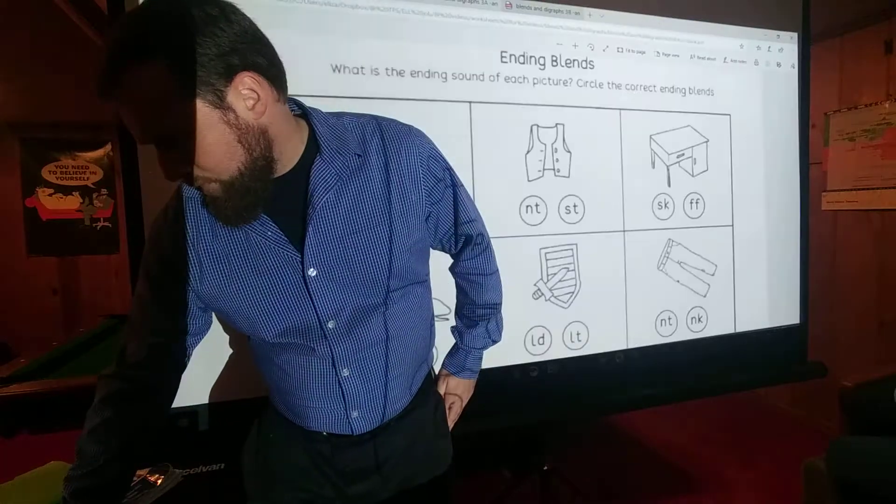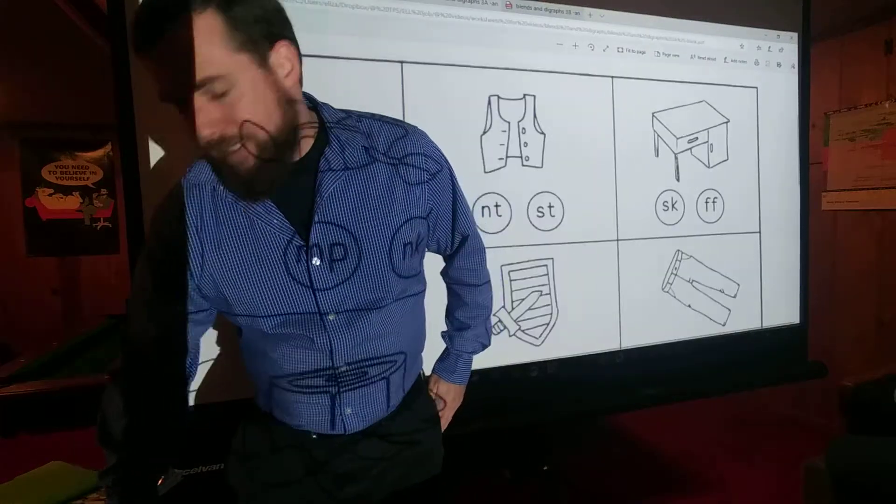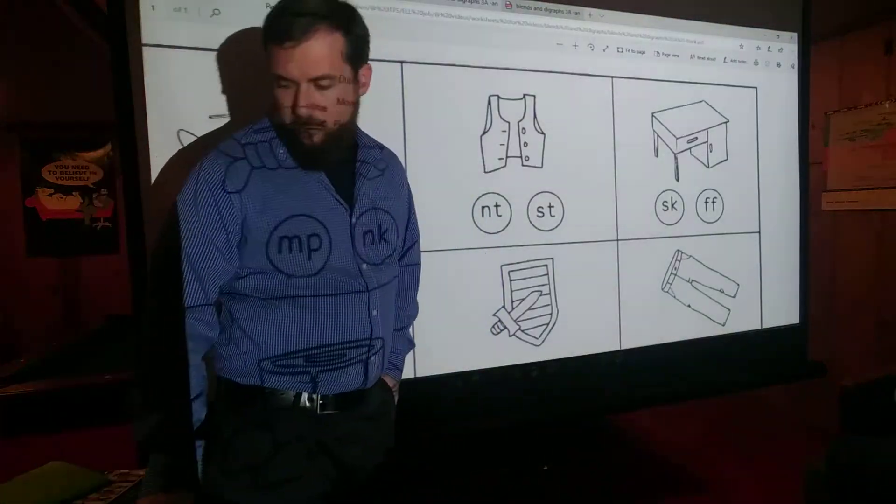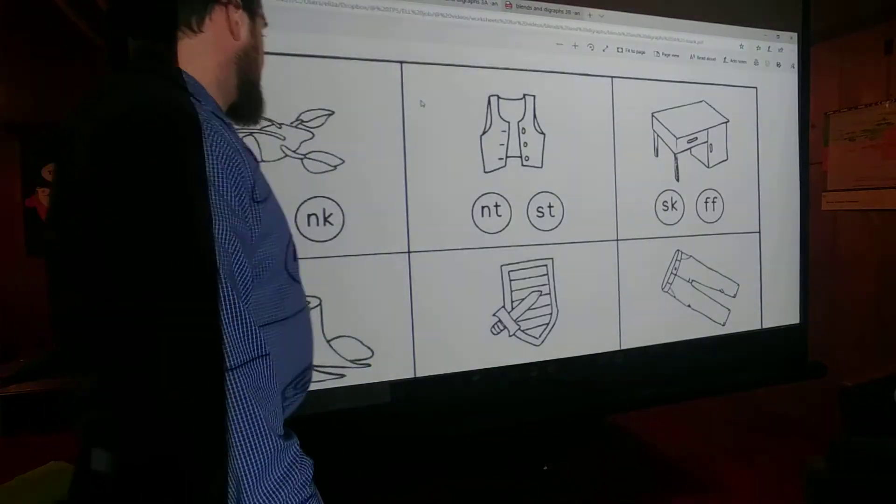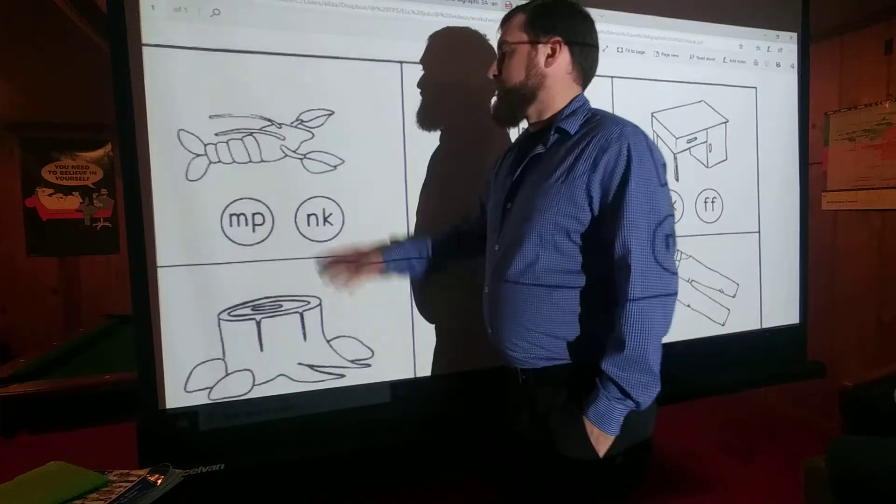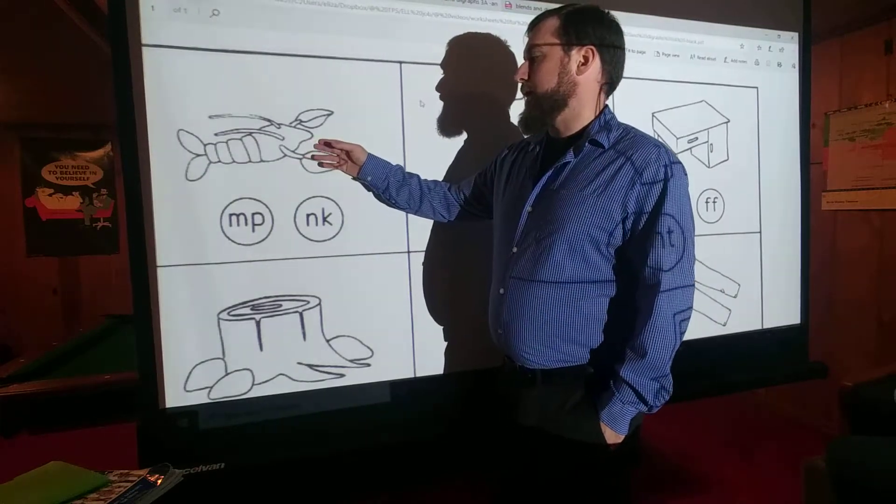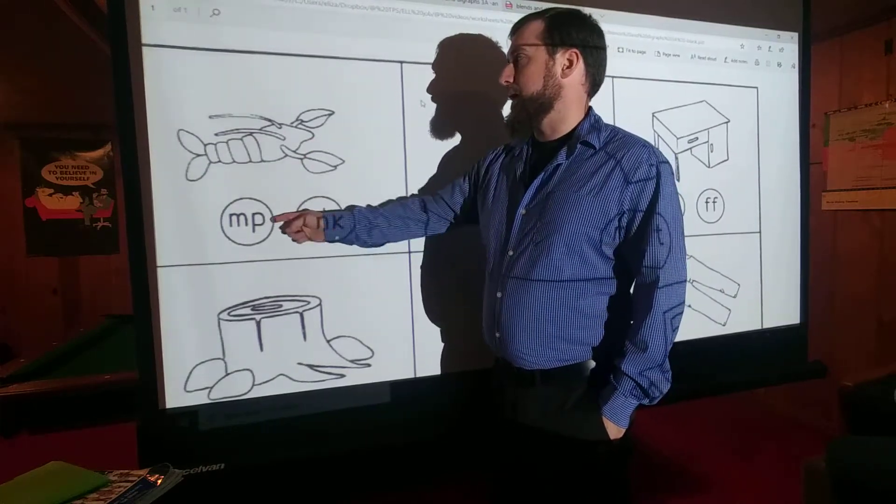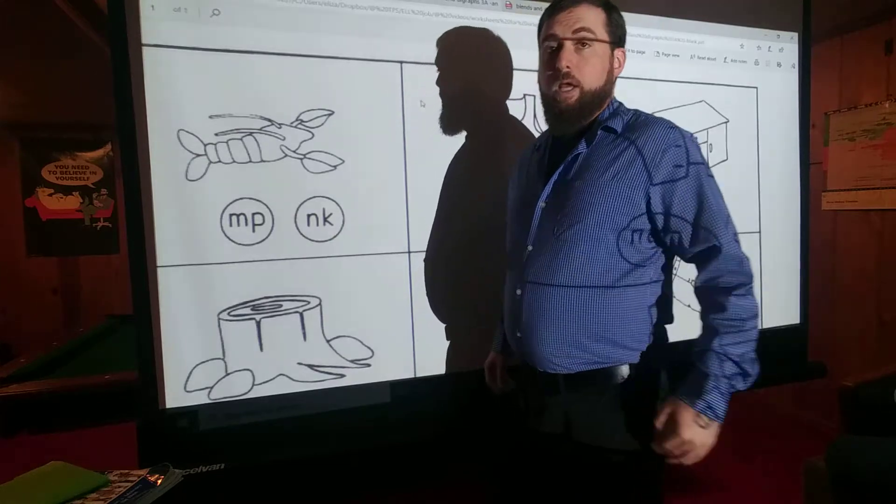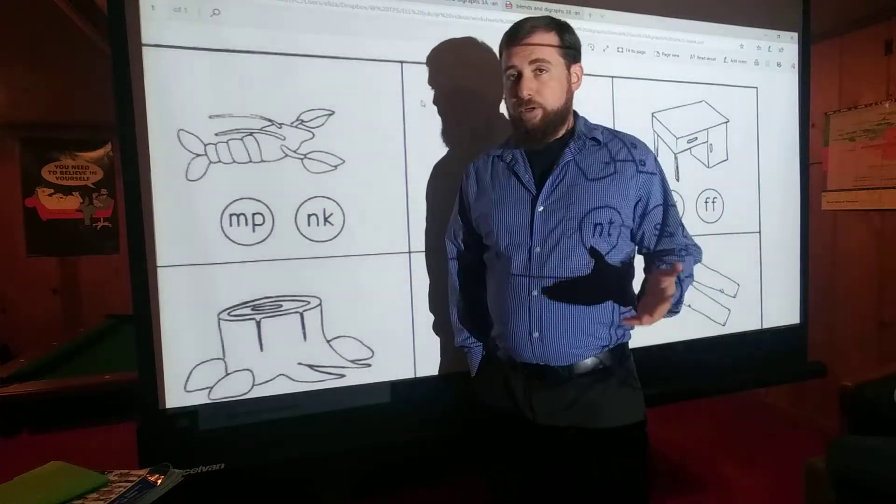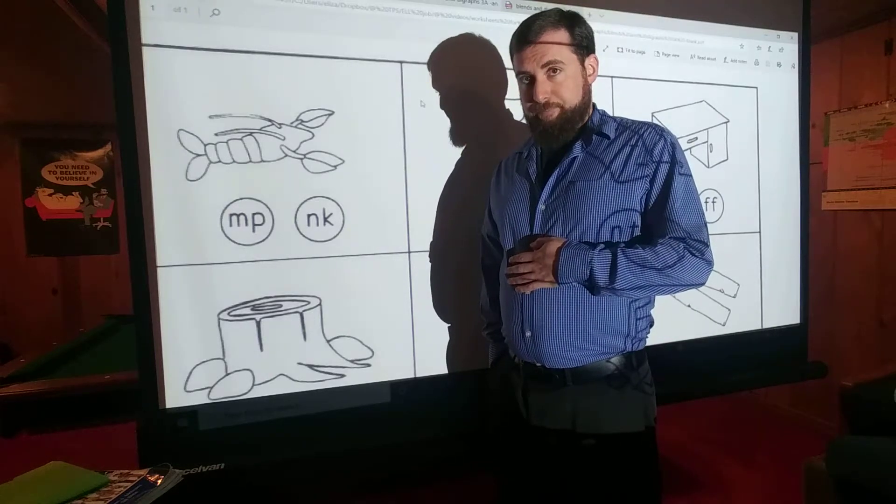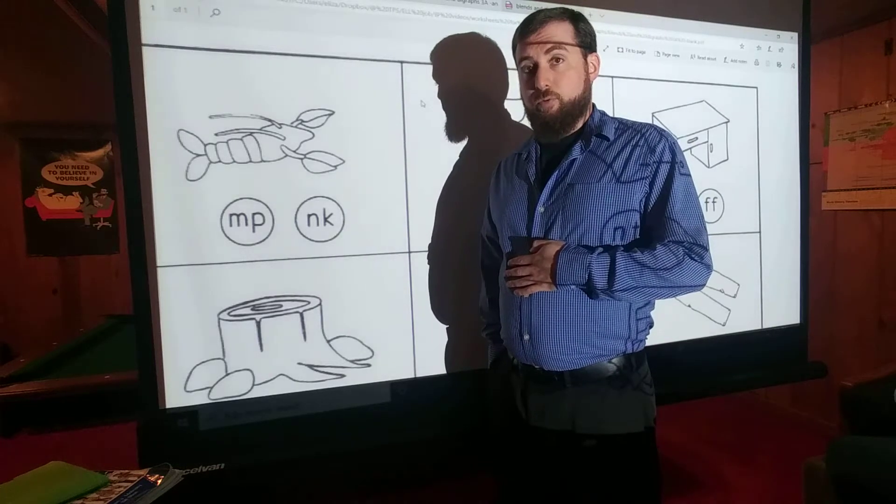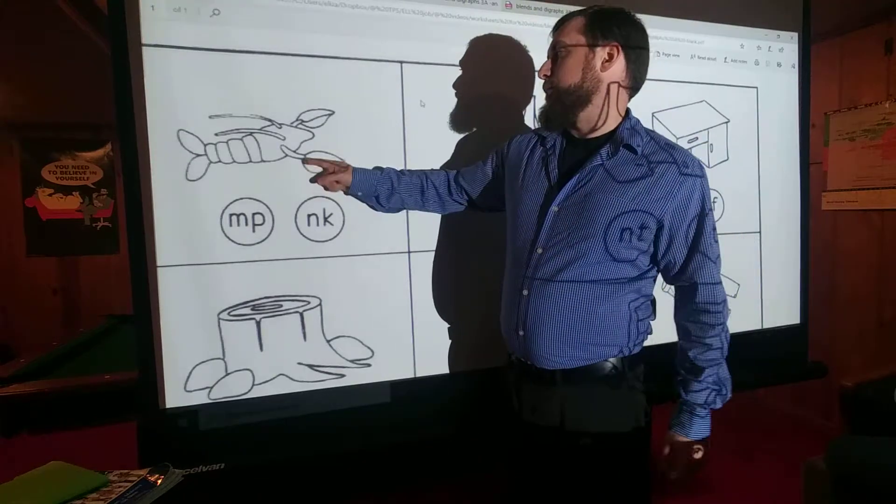So, we have talked about blending sounds at the beginning of a word. Today we're going to talk about them at the end of a word. So over here you've got a picture, and then they ask which of these do you think goes at the end of the word? Some of these words we have not talked about before, so I'm going to go over them with you the first time to make sure that you know the word. So this, for example, is a shrimp.